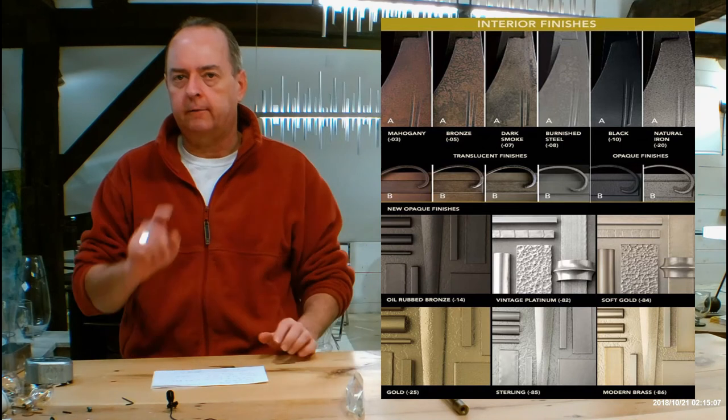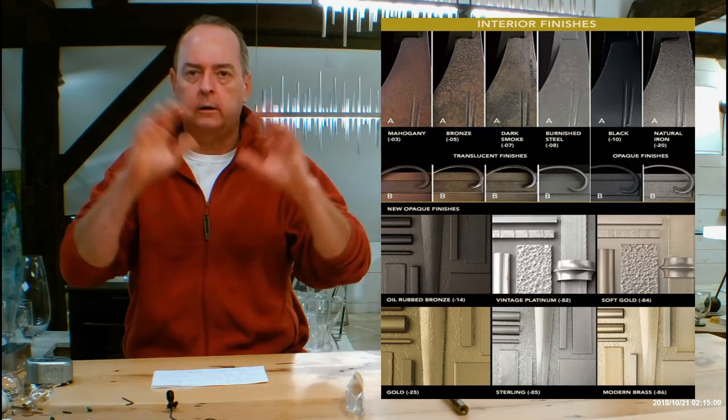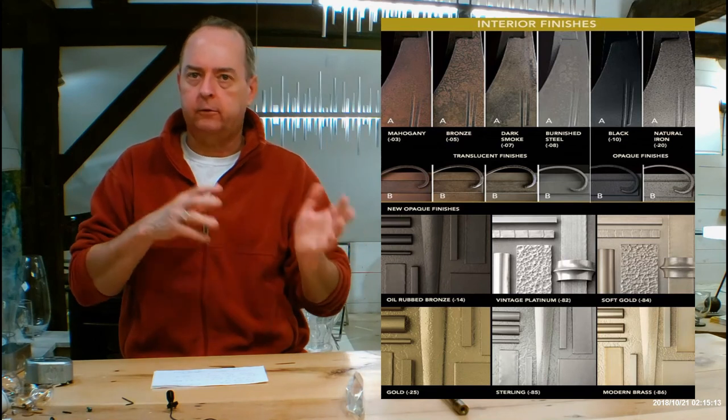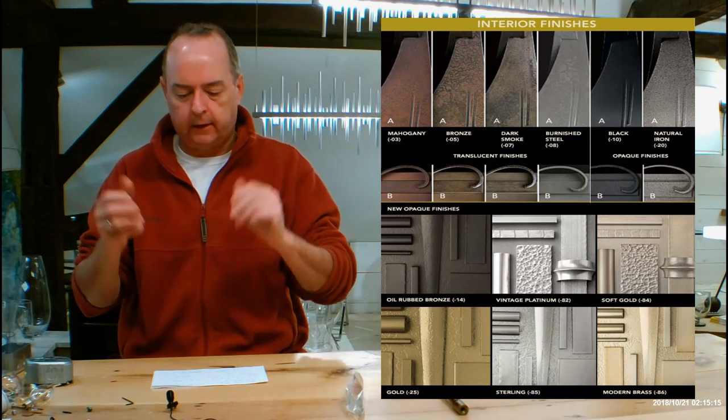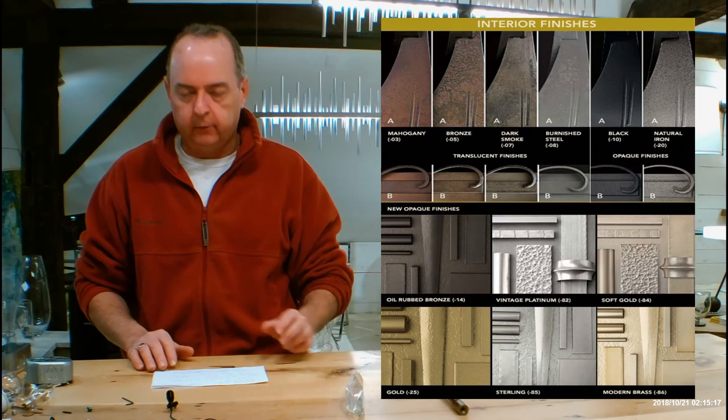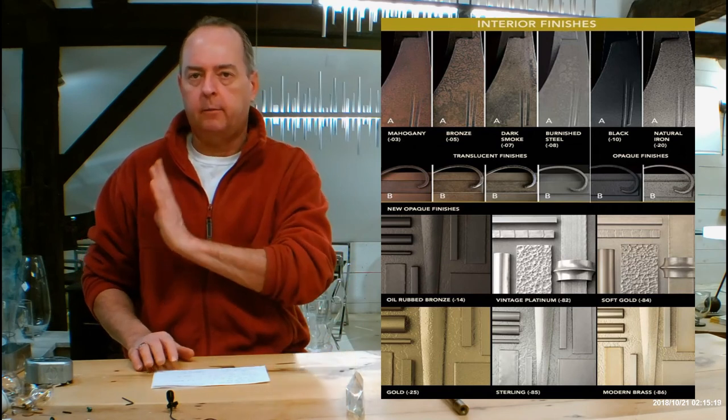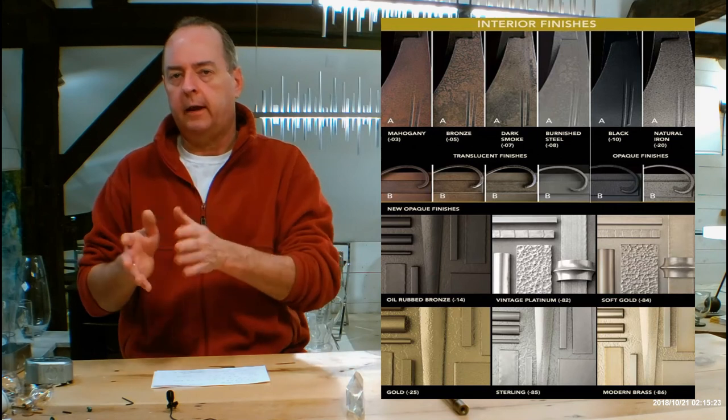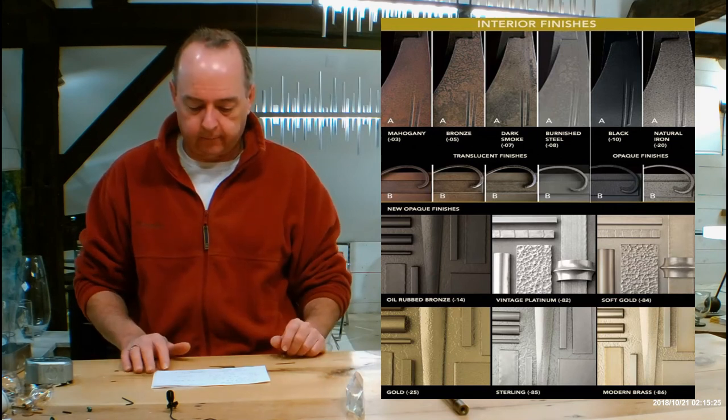You can click on that chart on different things. So you can click on dark smoke and a big page will pop up and show you lots of different things in dark smoke. Click on burnished steel or natural iron, it'll do the same thing. But it's really important that you understand how Hubberton Forge's finishes are kind of divided into translucent and opaque and how they can look on different fixtures.